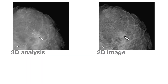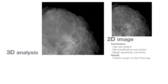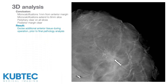Using traditional 2D imaging, the surgeon would conclude that the clips are present and microcalcifications are apparently uninvolved — and as a consequence, the positive margin would be discovered on final pathology. Using 3D tomosynthesis imaging, however, the surgeon would conclude that the microcalcifications are only 1mm from the anterior margin, extend to the 6mm slice, the periphery is clear on all slices, and the posterior margin is clear. As a result, the surgeon can excise additional anterior tissue during the procedure, prior to final pathology analysis.